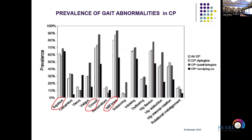When we look at the prevalence of gait abnormalities in children with cerebral palsy, this graph shows that the commonest are equinus gait, crouch gait, and stiff knee gait — which are what we see most in our clinic — with in-toeing and hip flexion deformities being less prevalent.